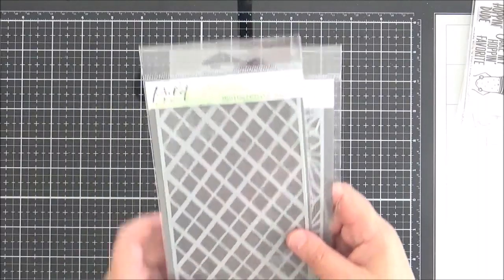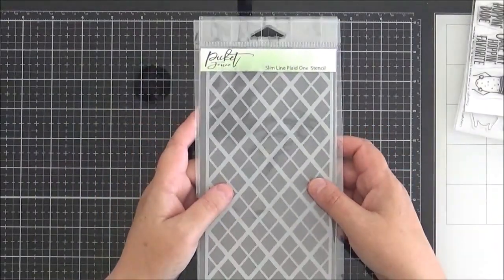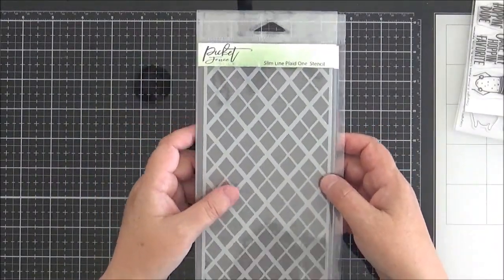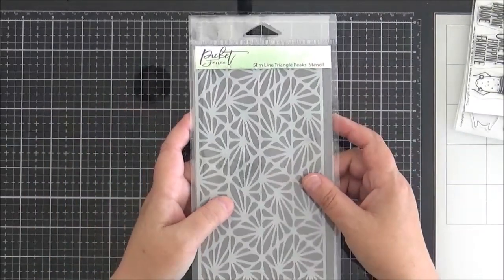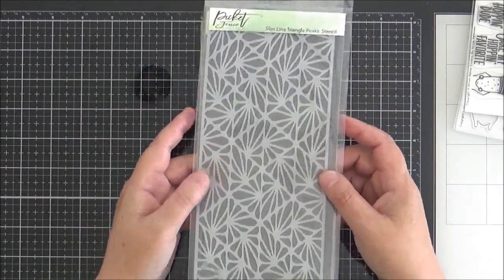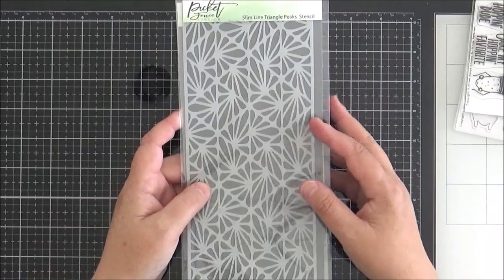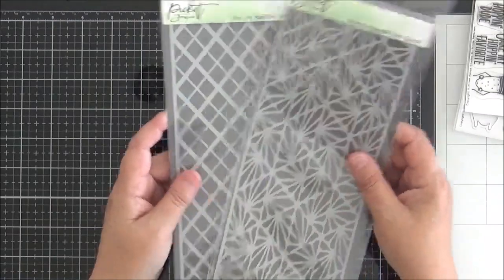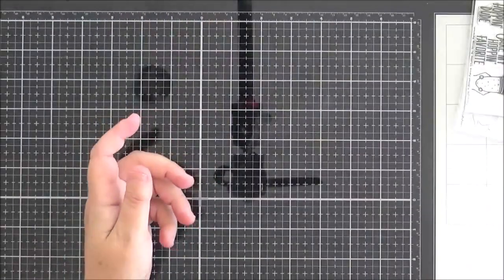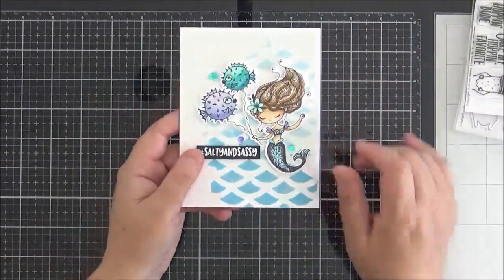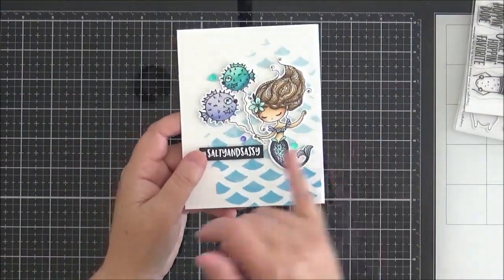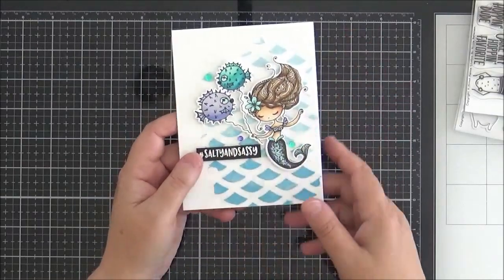Next up, we've got a couple of slimline stencils for you. You've got the slimline plaid ones stencil, and then you've got the slimline triangle peaks stencil. And of course, you can use these slimline stencils on an A2 card. So don't forget they work well on A2 as well. I used one on this little girl here. So they won't cover the whole panel, but they do cover a big portion of it.